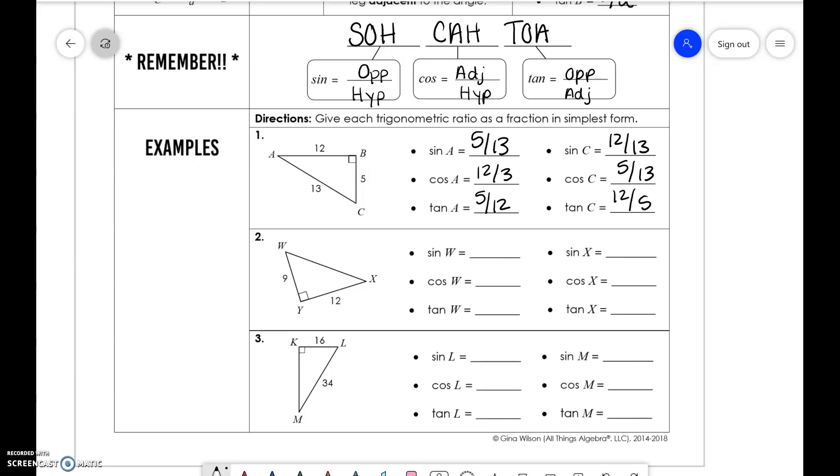For number 2, we don't know what the hypotenuse is, but that's fine. We can figure it out. We know how to do the Pythagorean theorem. So we're going to figure out what that value is. That means this is 15. So then when we do W, W is opposite over hypotenuse, which is just 12 over 15. And if we reduce this, we get 4 over 5. Cosine is 9 over 15, which is 3 over 5. And tangent is 12 over 9, which is 4 over 3.